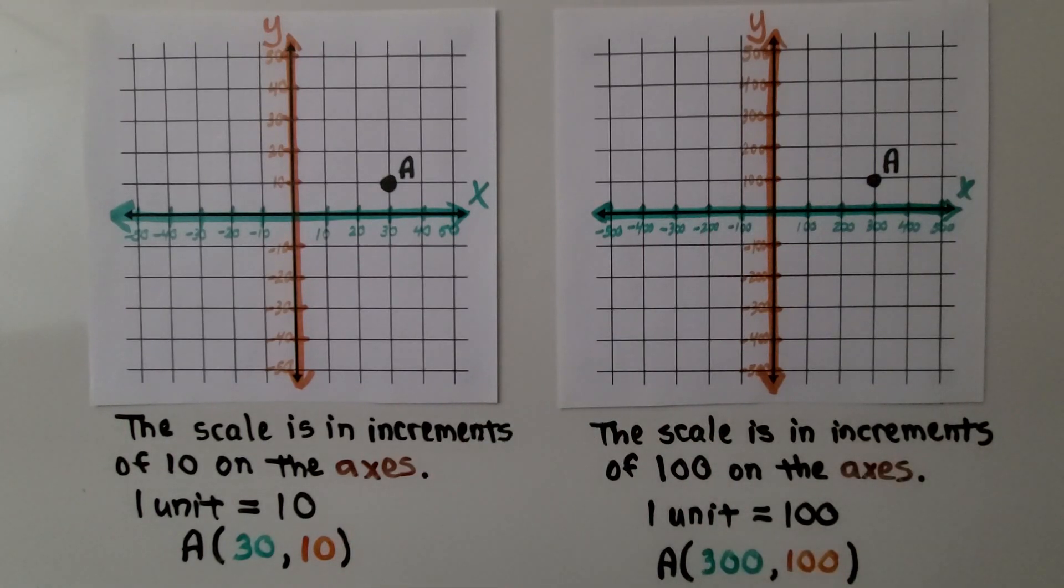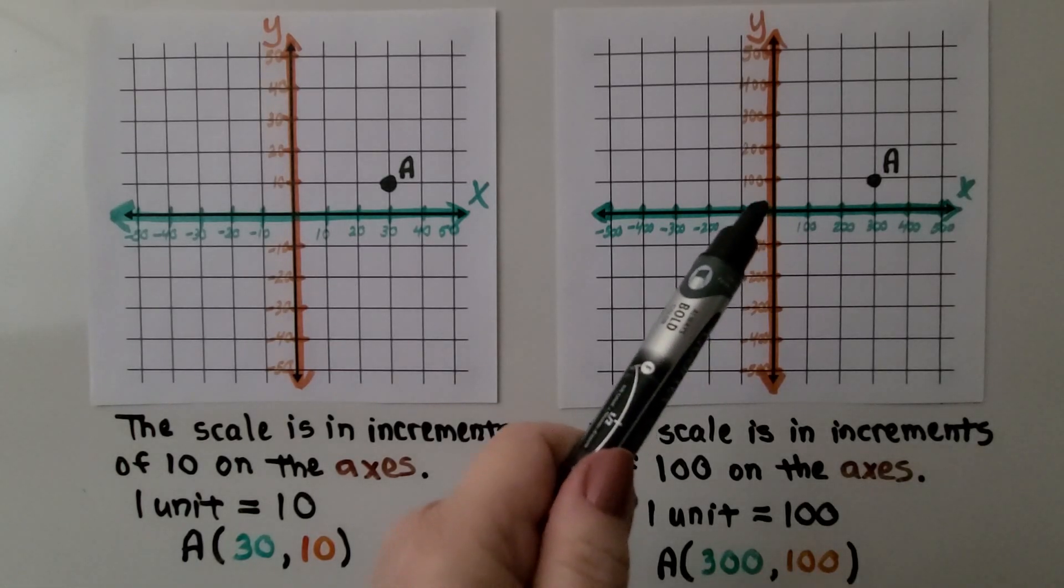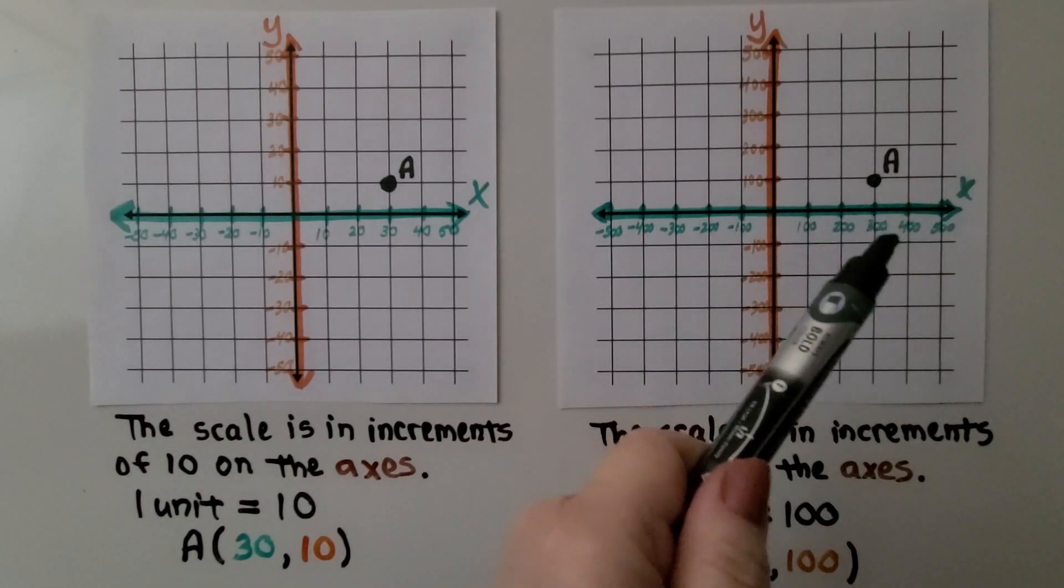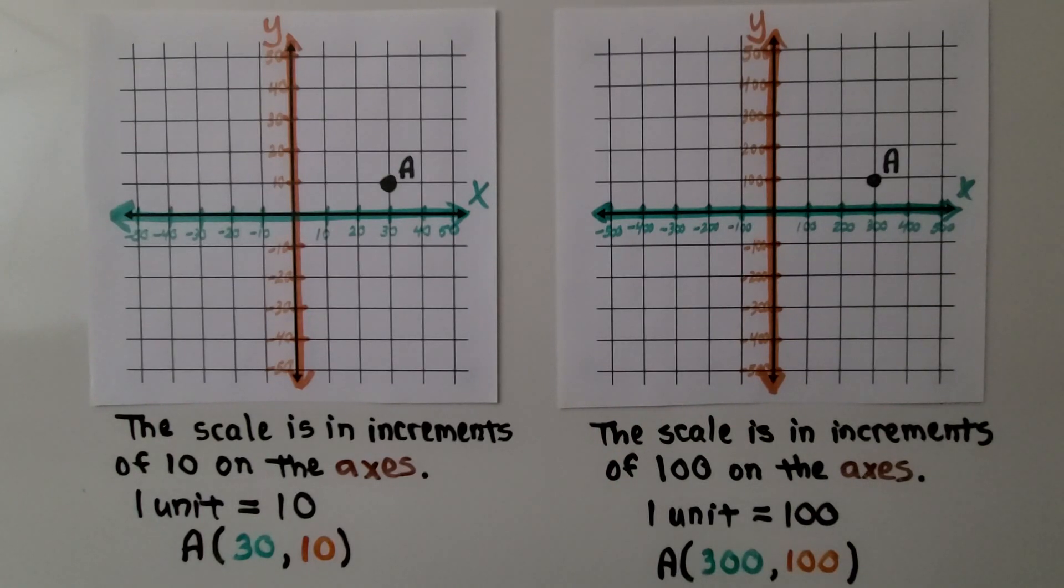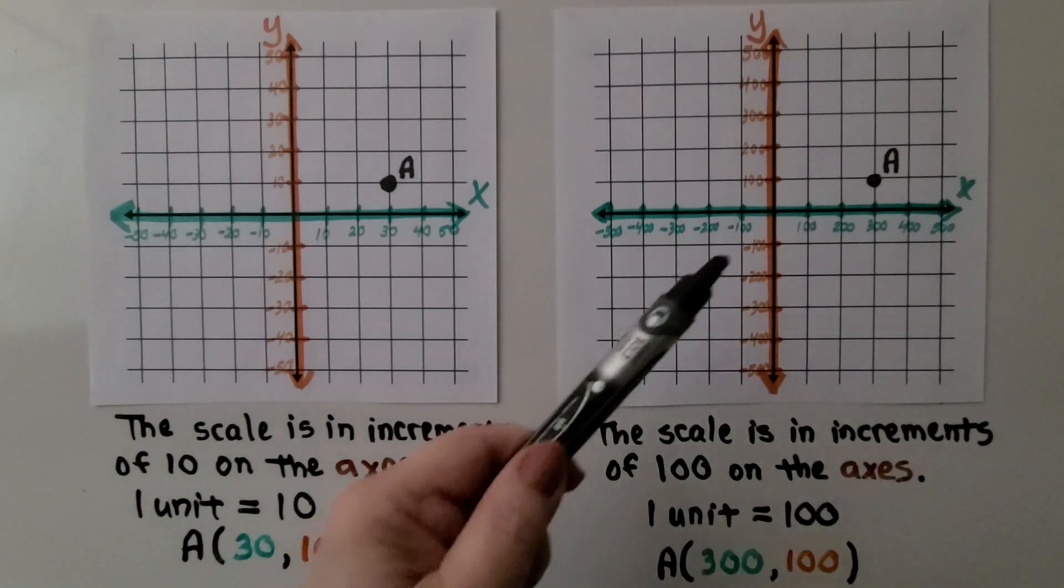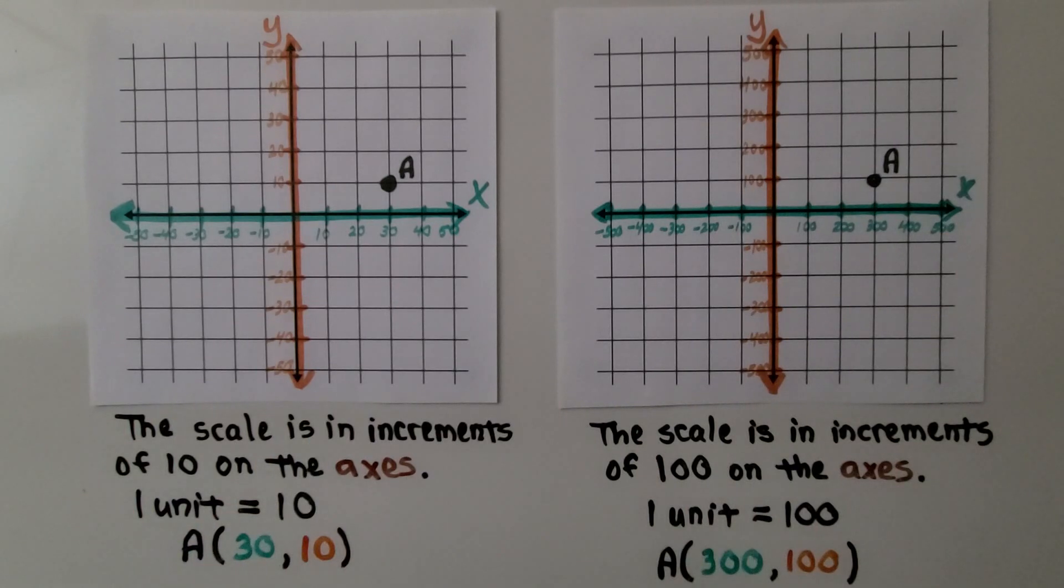But the scale on this coordinate plane is in increments of 100 on the axes. So we have zero, then 100, 200, 300, 400, and so on. One unit is equal to 100. So this point A is graphed at 300 for x and 100 for y.